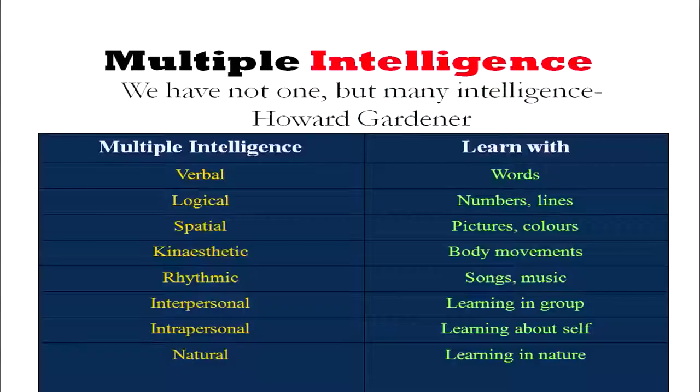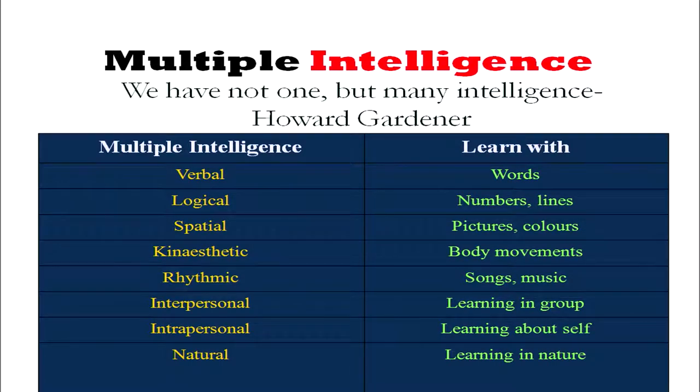Before we move ahead, let us try to understand one of the important features of the studies done in the field of intelligence in the last few decades. Earlier, we used to learn that there was only one intelligence — either people are intelligent or they are dull. But now it has been found, basically by the researches of Howard Gardner, that we have not one but many intelligences. That means everybody will have different patterns of intelligence, as is found in life also. There are people who are intelligent in music like Lata Mangeshkar, who may not be good in verbal or logical areas. Or a player like Sachin Tendulkar or MS Dhoni, who are good at kinesthetic but may not be good at rhythmic, verbal, or logical intelligence.